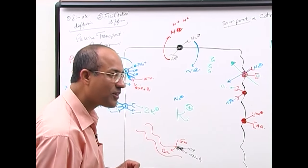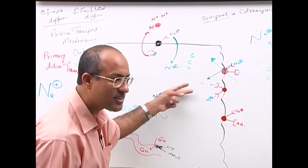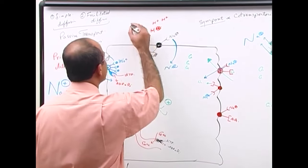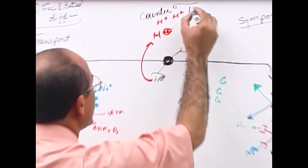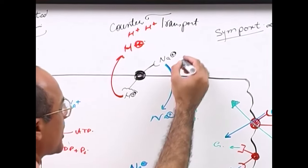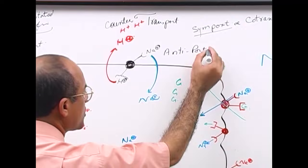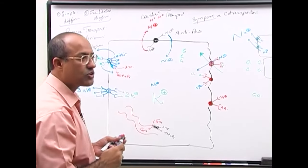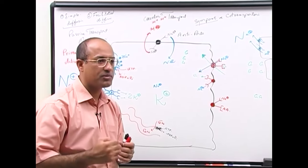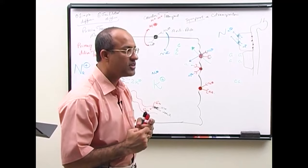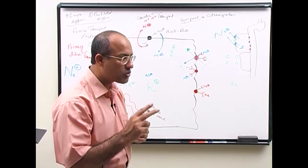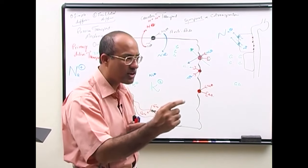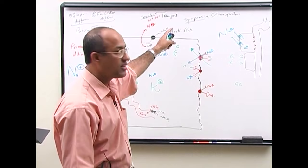Unlike co-transport, this is not a symport because the two molecules move in opposite directions—this is called counter transport, or antiport. The sodium-glucose co-transporters were symports, while the sodium-proton transporter is an antiport. In secondary active transport, if both molecules move in the same direction the mechanism is called a symport or co-transporter; if they move in opposite directions, it is called a counter transport or antiport.